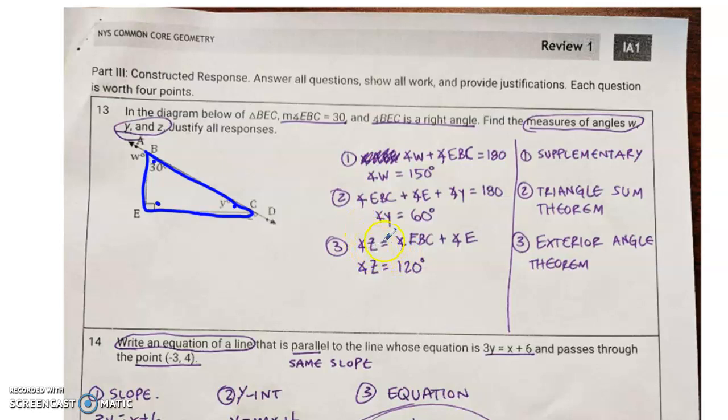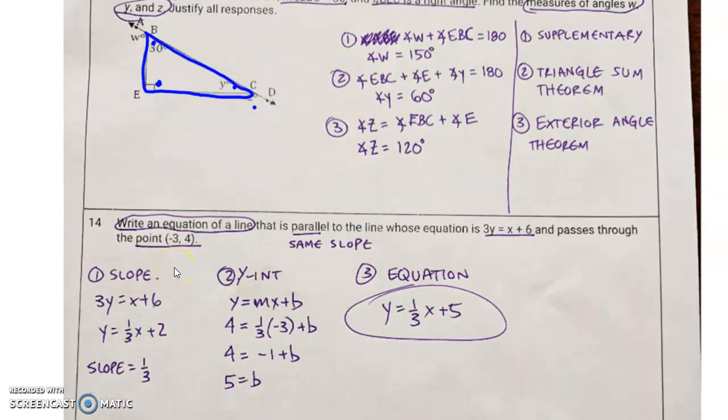Last but not least, it says angle Z is equal to angle EBC plus angle E. Angle Z is here, which means it's another supplementary angle. So, you could use whatever angle Y was and say that, well, that's angle 60, that angle is 60 degrees, rather, and then you can say that this is 120 because they add up to 180. Or, you could use the exterior angle theorem, which says that angle EBC, which is this guy over here, plus angle E, I'm sorry, EBC is up here, plus angle E, which is over here, those are the two remote interior angles. They add up to this angle. That's called the exterior angle theorem. And, we've done the exterior angle theorem before, we actually did it previously on this assignment.